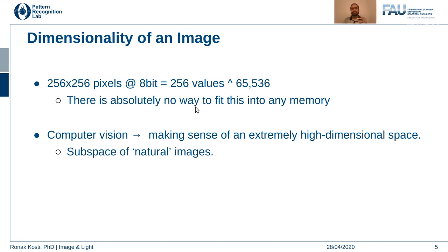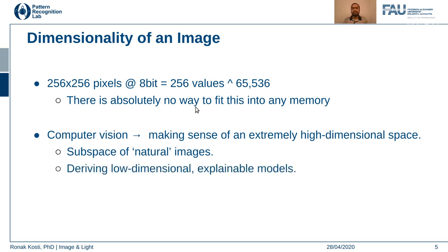Remember, the dimensionality we discussed is only for 256×256 images. In practice, when doing deep learning, convolutional neural networks, or any computer vision problem, image sizes could be huge — for example in hyperspectral imaging or medical imaging, image sizes can be in the range of thousands by thousands. The possible combinations increase exponentially, making it very impractical. Therefore we focus on low-dimensional values, extract only the natural images of interest, and model those features to understand what is happening.